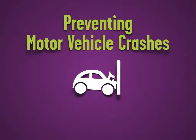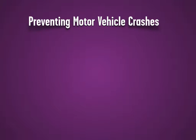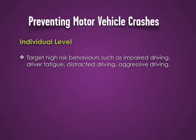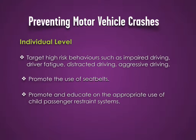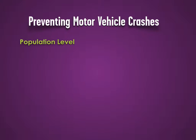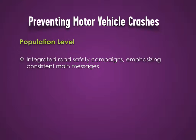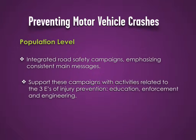Preventing motor vehicle crashes. Strategies at the individual level include targeting prevention of high-risk behaviors such as impaired driving, driver fatigue, distracted driving, and aggressive driving. Promote the use of seat belts, and promote and educate on the appropriate use of child passenger restraint systems. At the population level, integrated road safety campaigns use both traditional and non-traditional forms of media to emphasize consistent main messages. Support these campaigns with activities related to the three E's of injury prevention: education, enforcement, and engineering.